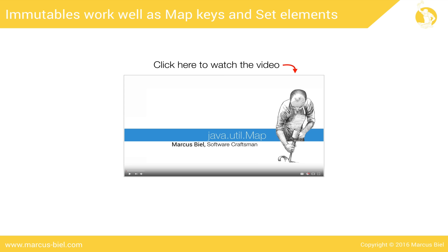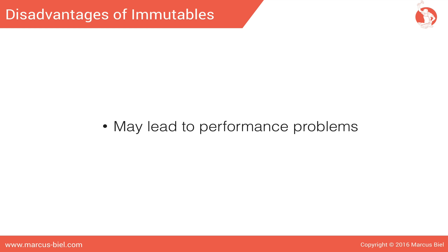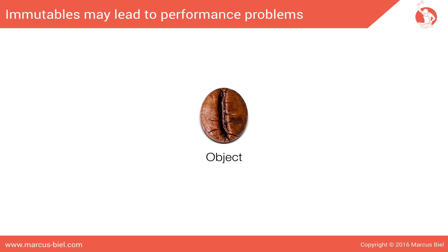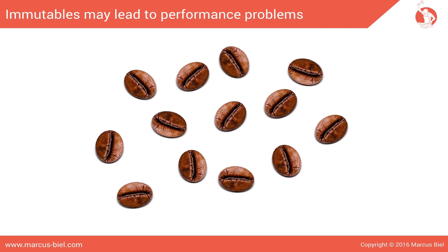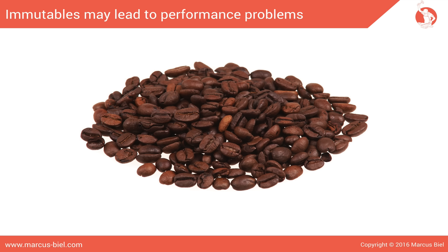Those are the main advantages of immutables. Let's also look at their disadvantages. The biggest disadvantage of immutable classes is that their use may lead to performance problems. Immutables require a new object for every distinct state they represent. Therefore, the use of immutables often increases the number of objects created — naturally, the more objects created, the more system resources will be used. However, this may not be a problem at all, as there are many more influencing factors as we will see later on.